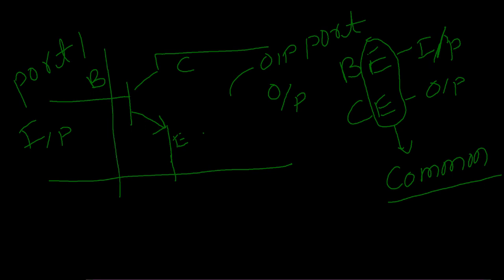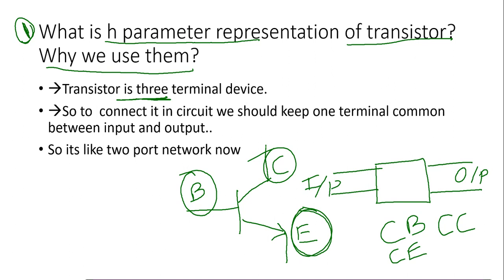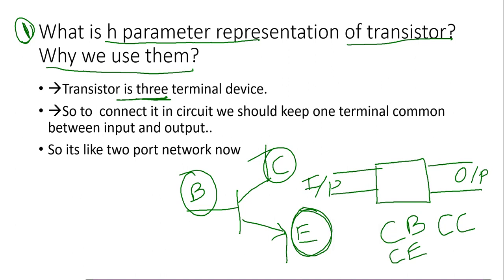So this transistor itself we are using like a two port network. For this two port network, to find different parameters of the circuit — like input resistance, output resistance, current gain, and voltage gain — we use two port network parameters. For that reason, we are using the H parameter model here. Now why only H parameters? That question we will be answering in the next video. Thank you.